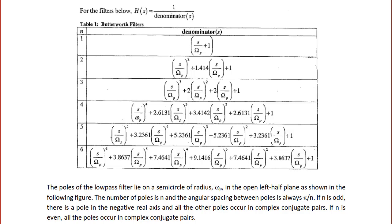The poles of the low-pass Butterworth filter lie on a semicircle of radius ωp in the open left half plane. All poles must be in the open left half plane for the filter to be stable. There are n poles with angular spacing of π/n between them. If n is odd, there is a pole on the negative real axis and the rest occur in complex conjugate pairs. If n is even, all poles occur in complex conjugate pairs.